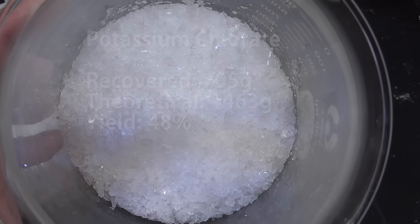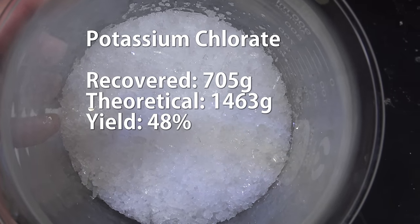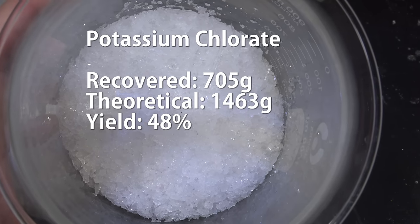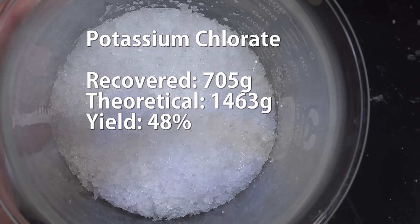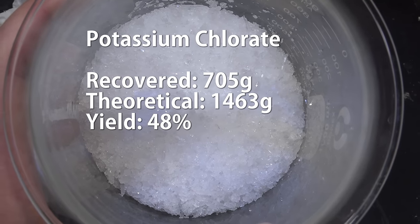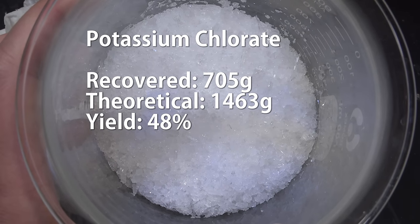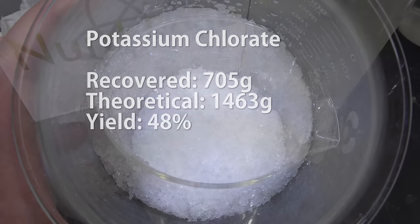Our recovered yield was 705g after 40 days at 2 amps. Under theoretically ideal conditions for the same amount of time and current we should have 1463g of potassium chlorate. So our yield was 48% of maximum.